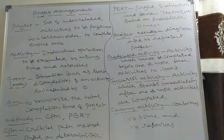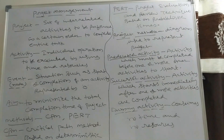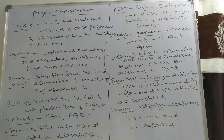For example, the activities in a building construction project are: plan approval, site preparation, transportation of raw materials, construction of foundation, construction of pillars, construction of walls, plastering, wiring, plumbing, and finally, colouring. These are the activities involved in that project.